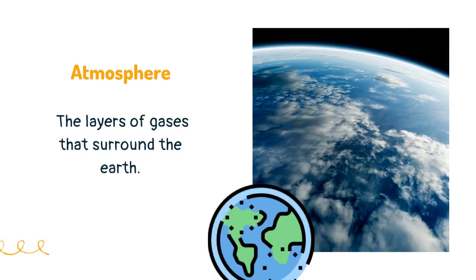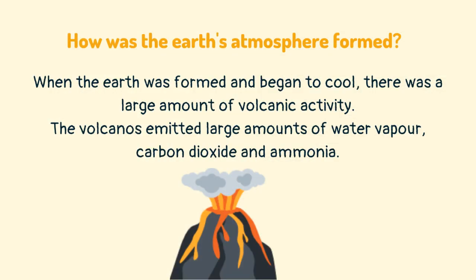The atmosphere is the layers of gases that surround the earth. When the earth was formed and began to cool, there was a large amount of volcanic activity. The volcanoes emitted large amounts of water vapor, carbon dioxide and ammonia.